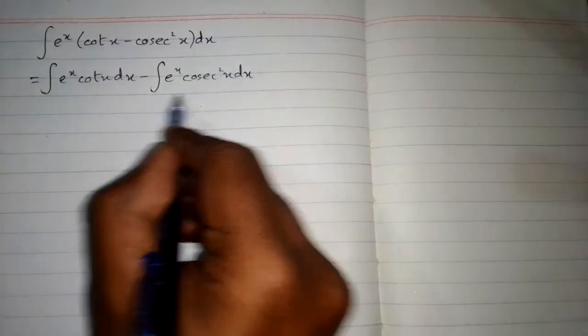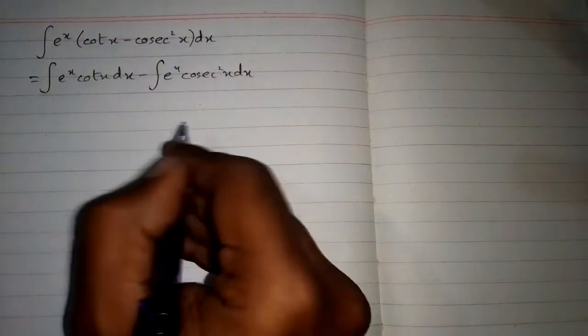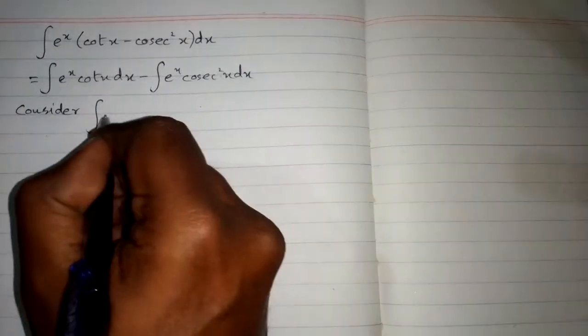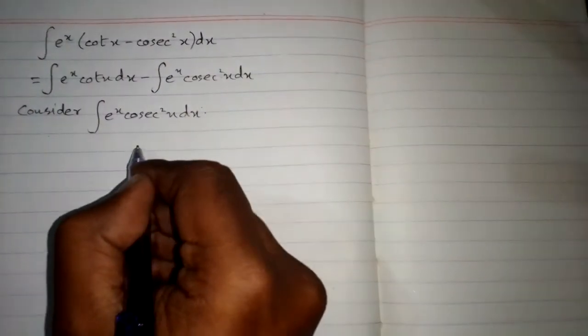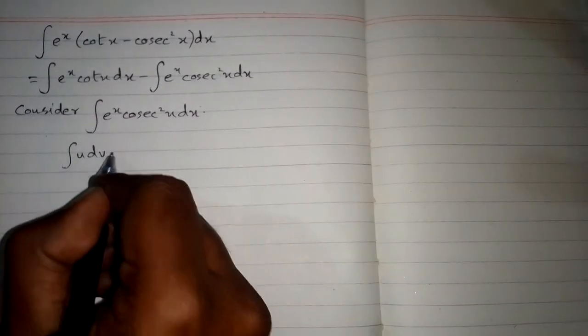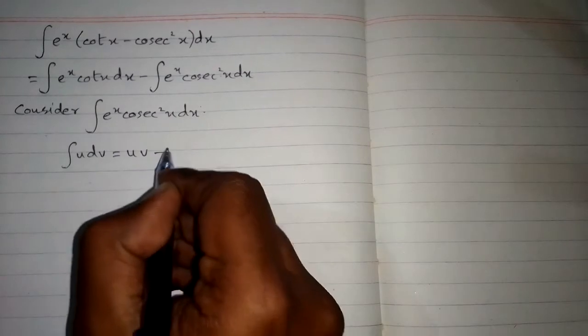Now we will integrate this function by using integration by parts. We consider the integral of e to the power x cosec squared x dx, and we will use the formula: integral of u dv equals uv minus integral of v du.